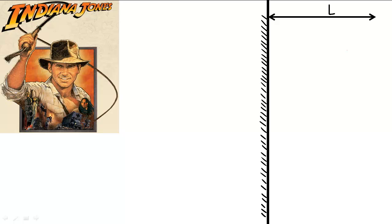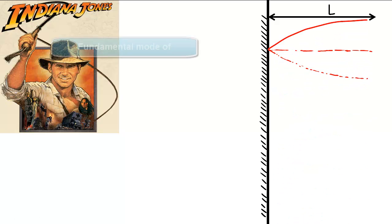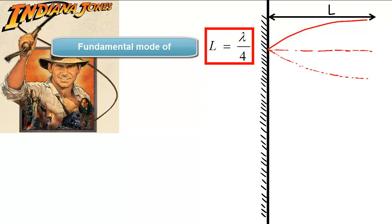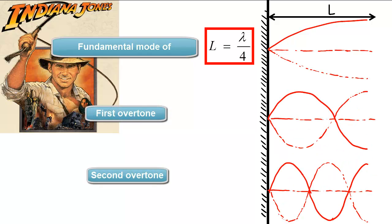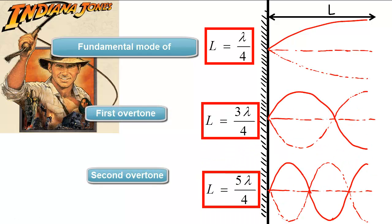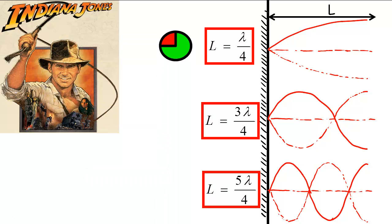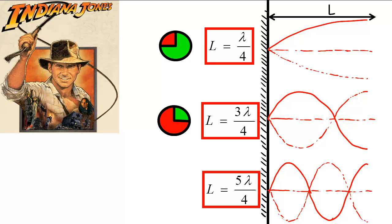By hand, it's very difficult to produce these modes of vibration in an open-ended or non-fixed-end spring, but they do exist and can be described just as we described the others, in terms of the number of wavelengths that fit on the spring. In the first example it's a quarter of a wave, the next is three-quarters of a wave, and finally five-quarters of a wave.